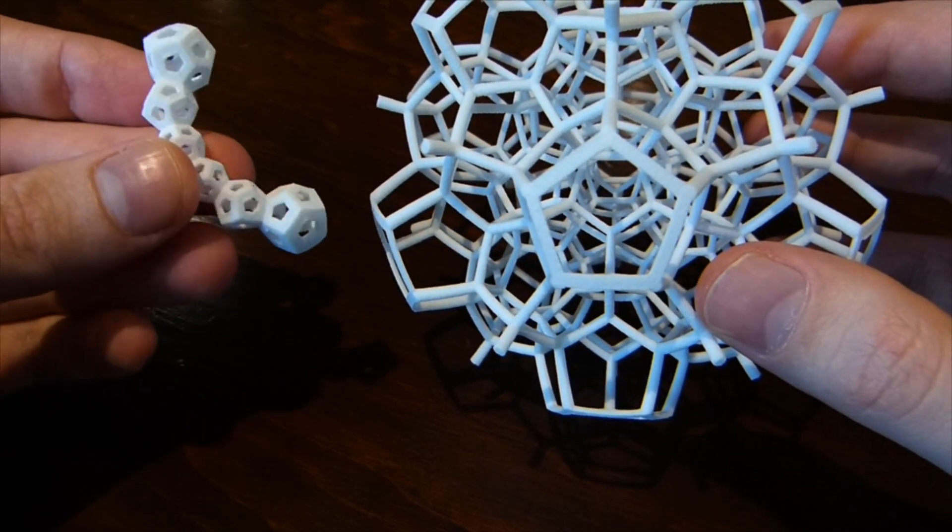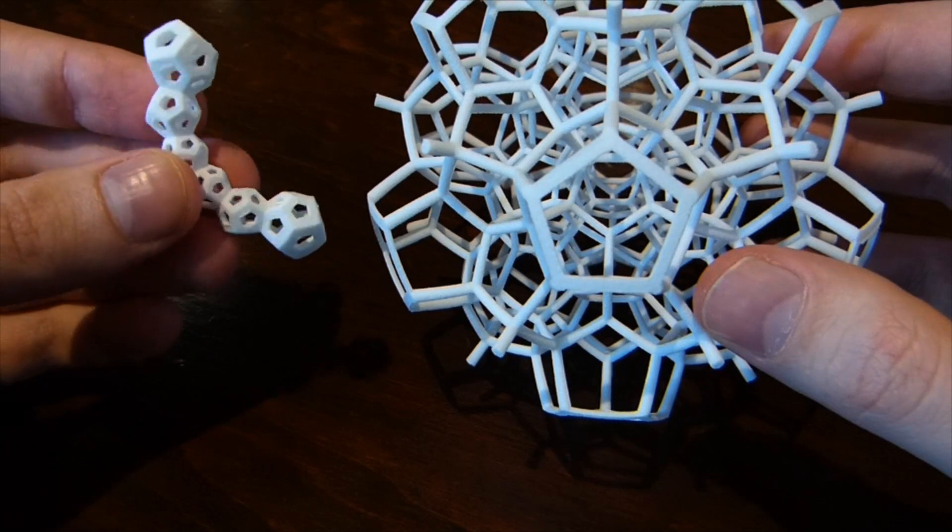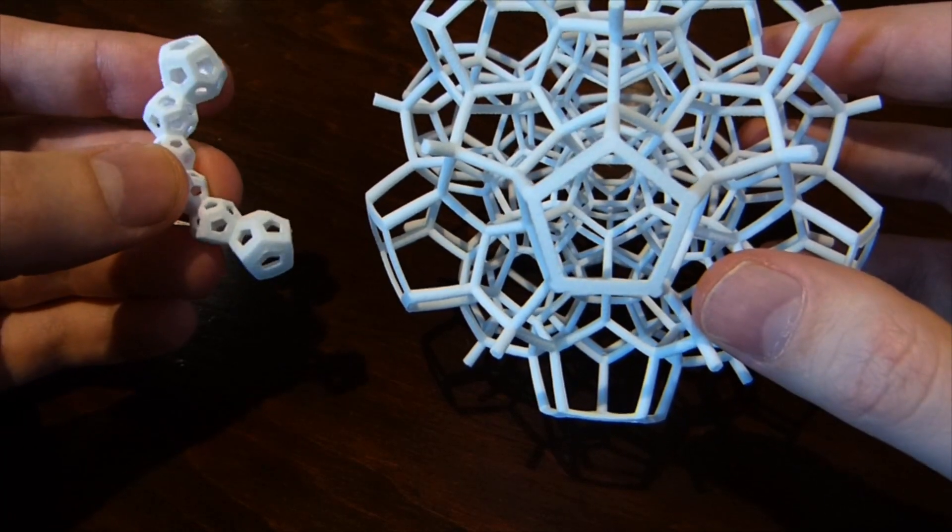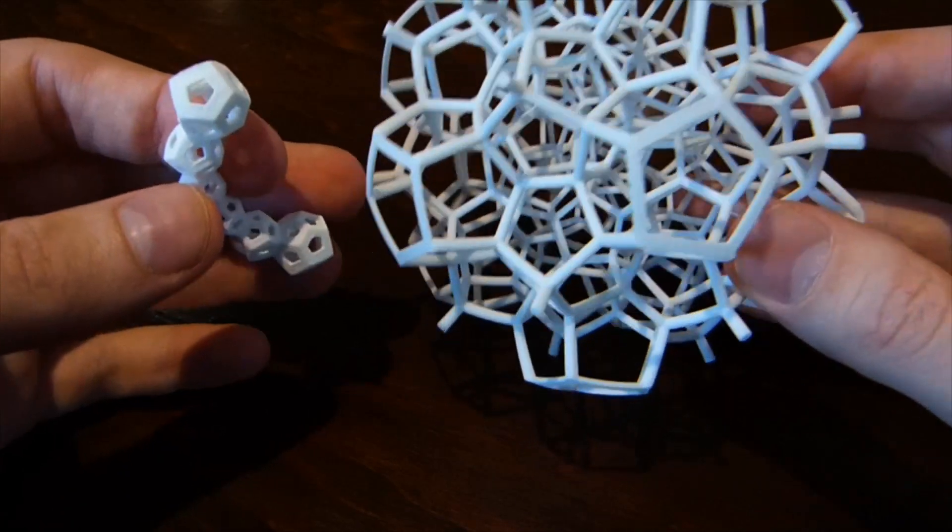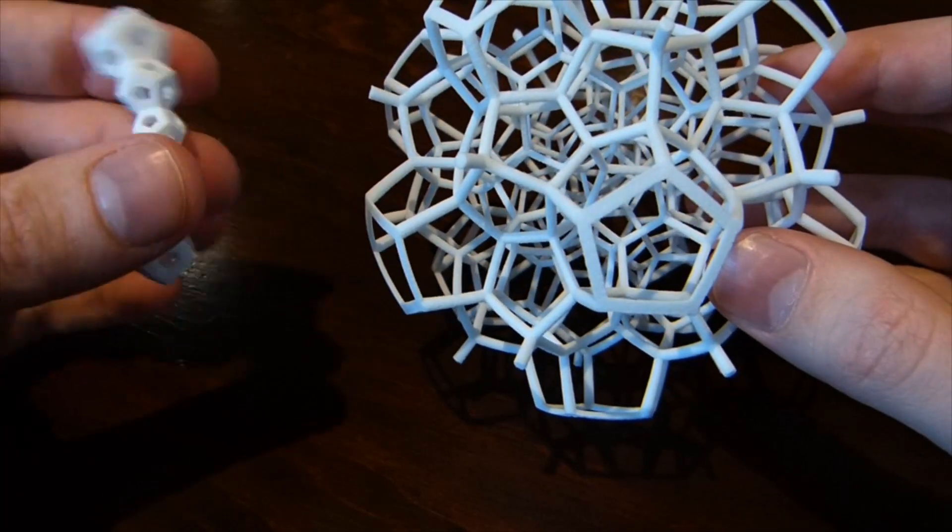There are five of these pieces, each one of which has six dodecahedra. So five times six is 30. So it's 30 cells of the 120-cell. So it's the 30-cell puzzle.